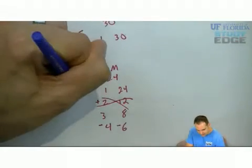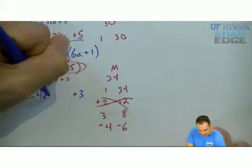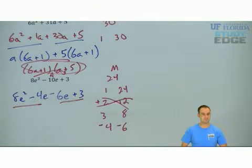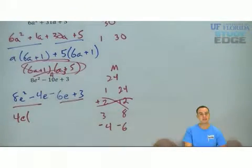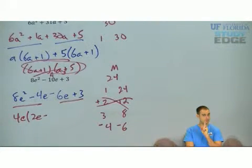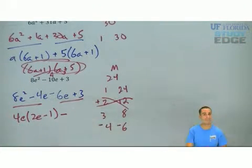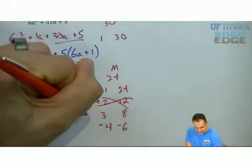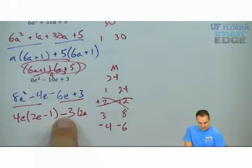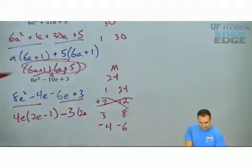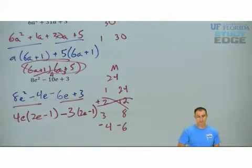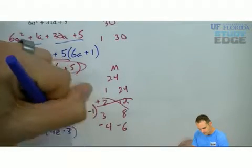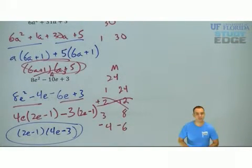So, 8e² plus 3, bring them down. Negative 10e will be minus 4e minus 6e. What's in common with the first two terms? I can factor out 4e, leaving me with 2e minus... Bring down the middle sign, which is negative, which means all the signs are going to change. I can factor out negative 3. Negative becomes positive, and I have 2e. Positive in this case becomes negative, and I'm left with negative 1. They match, as they should. 2e minus 1 times 4e minus 3. So there we go, and you know what time it is.